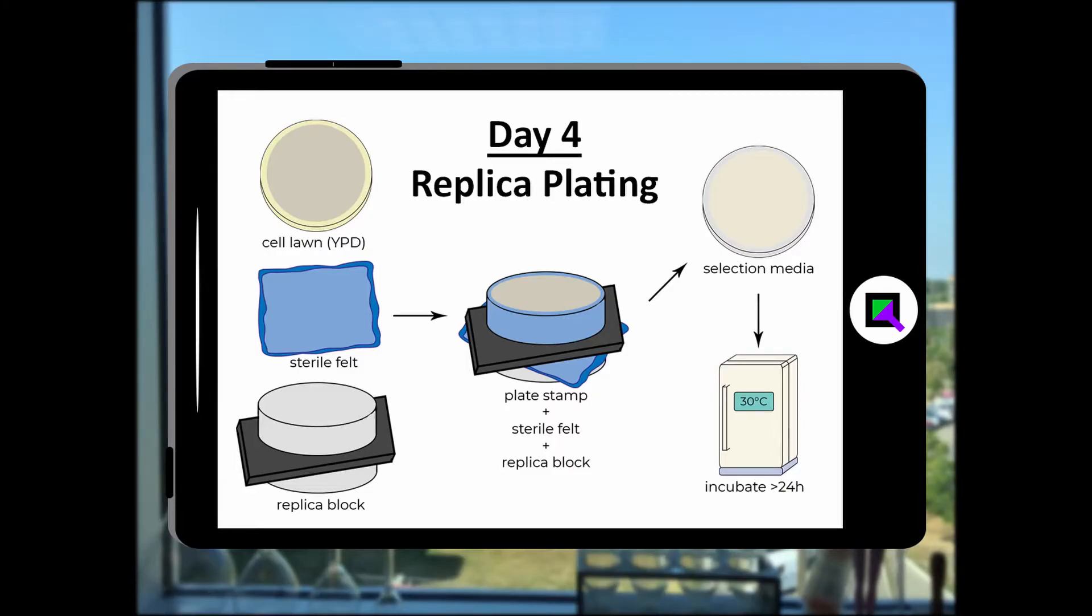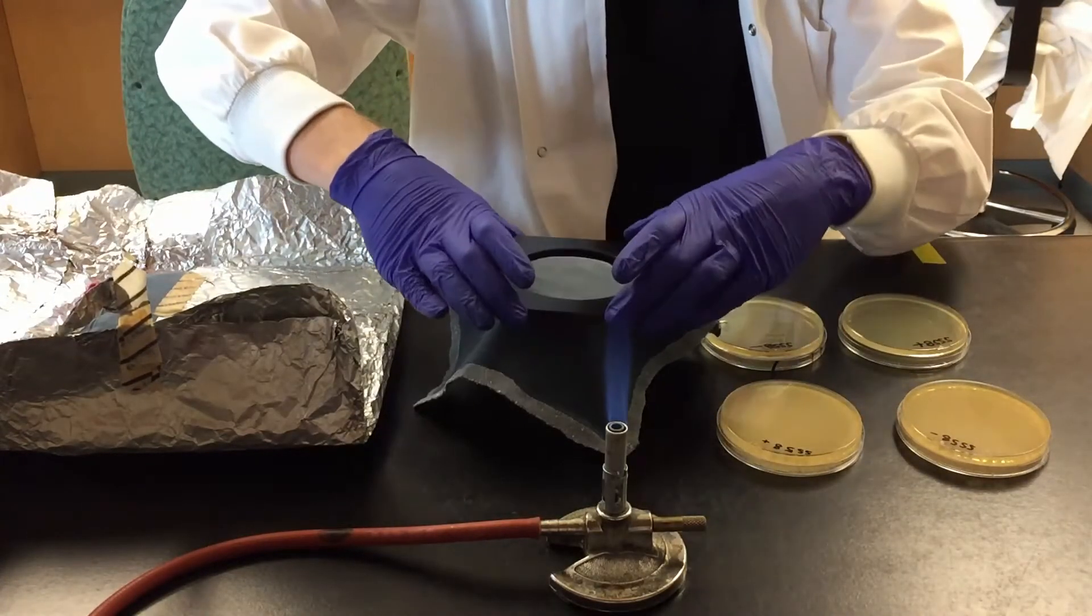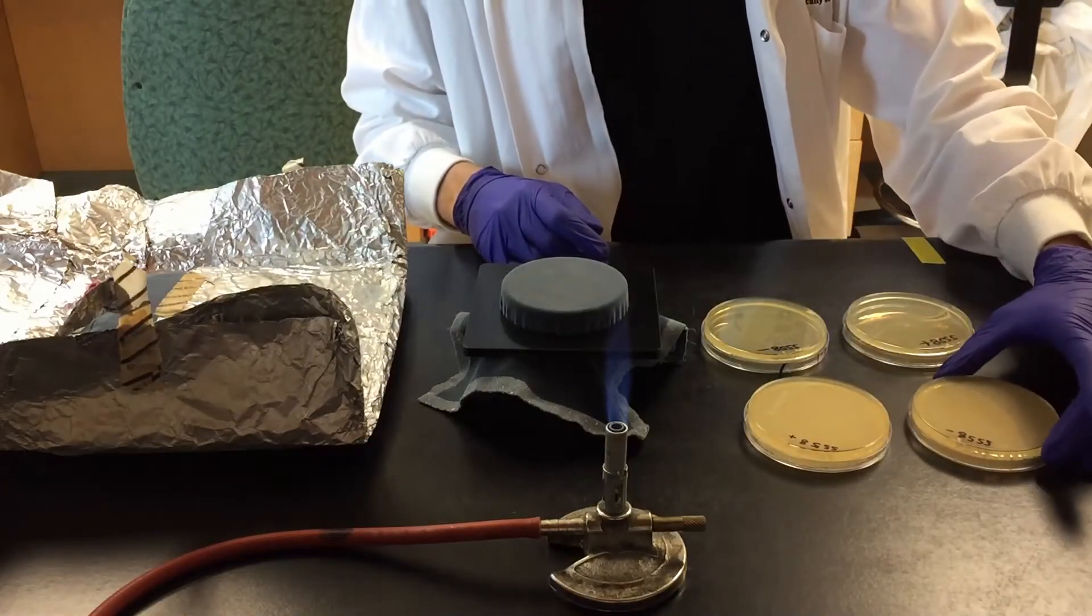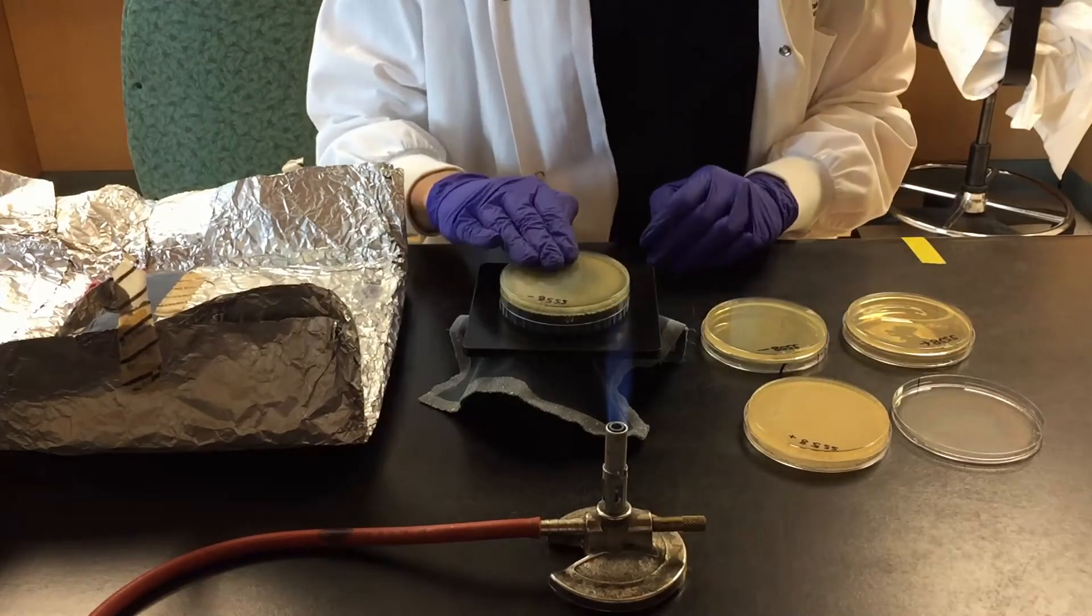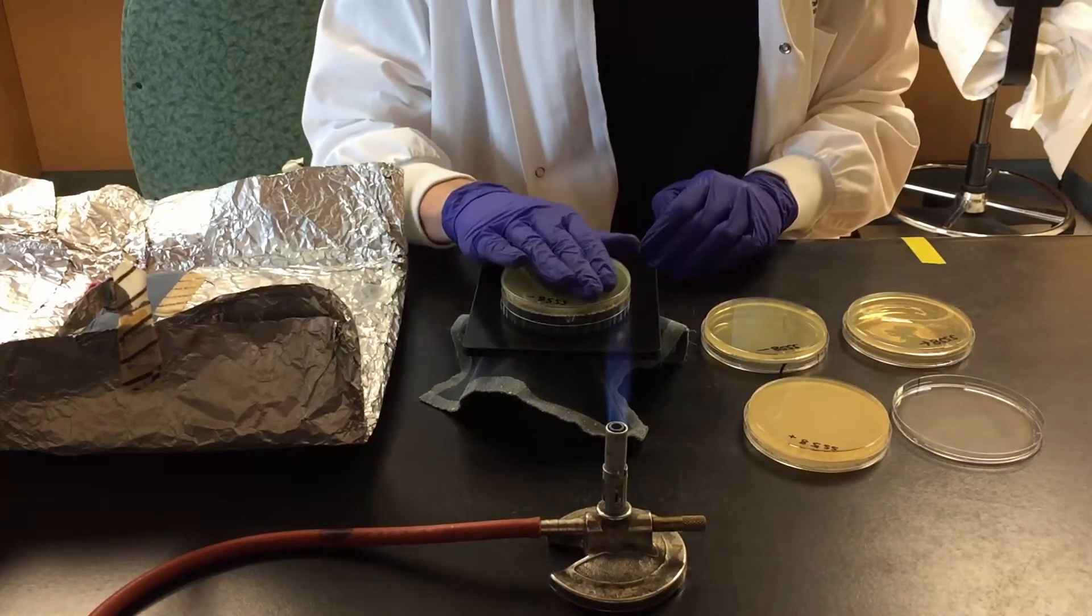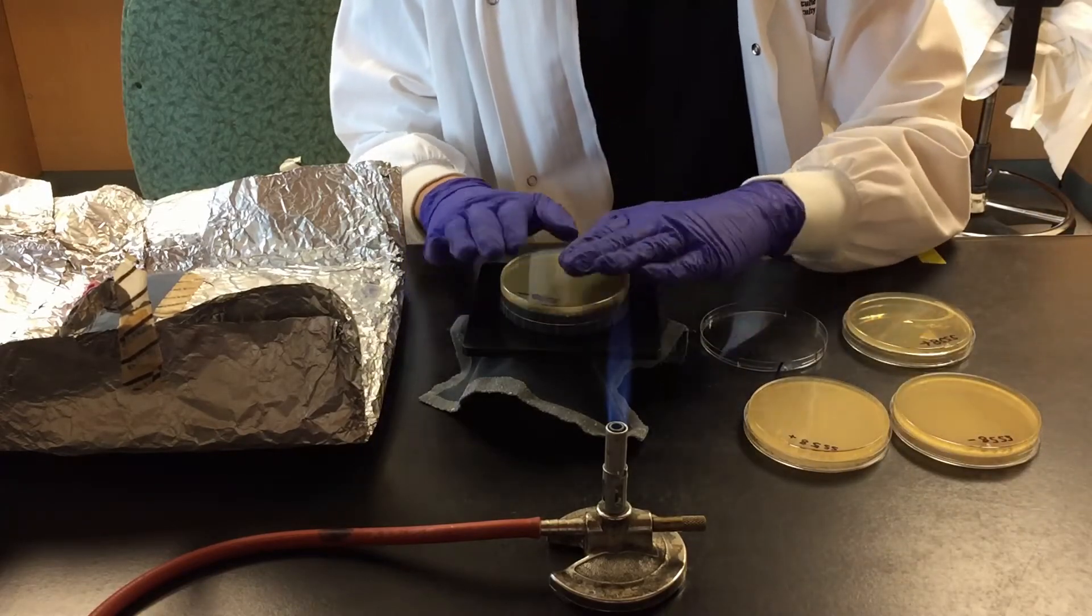Day four, replica plating. Place the sterile felt over the replica block and make a stamp on the felt with the lawn of cells from the transformation. There's no need to apply significant pressure to the plate, just ensure that the agar is making contact with the felt.